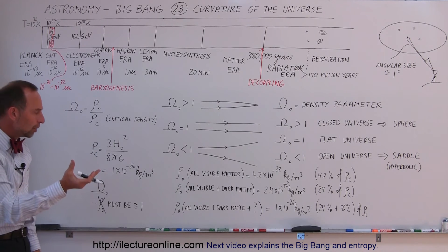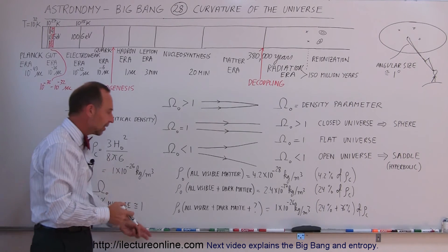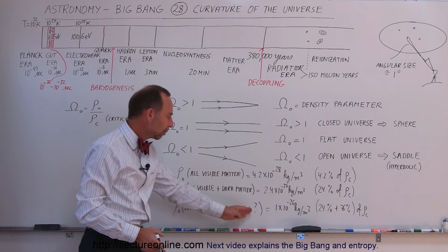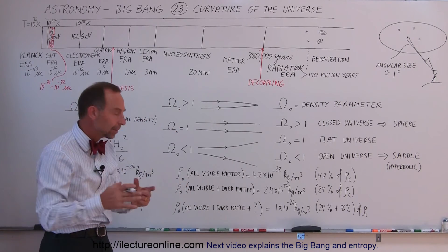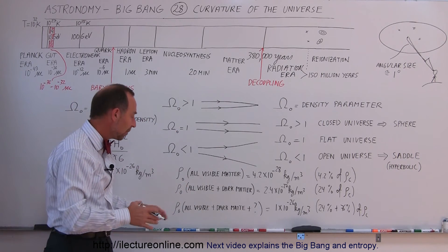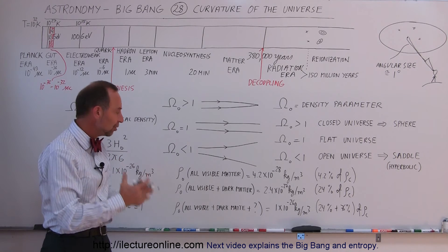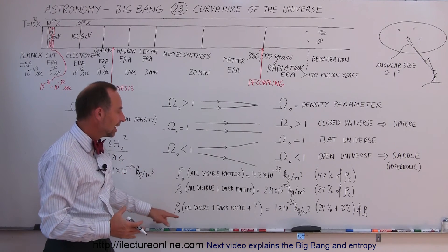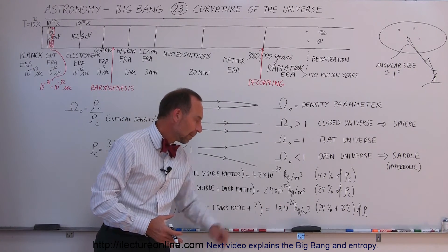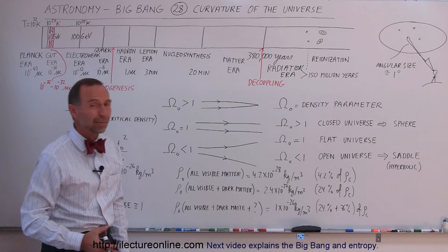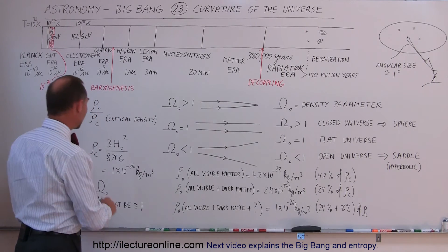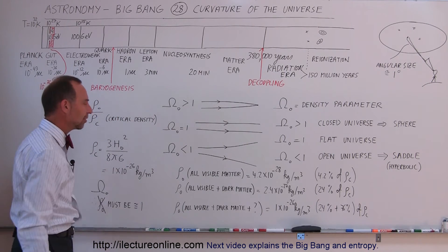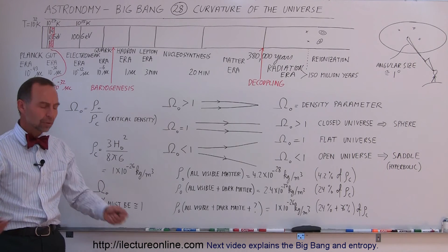There is a missing component. That means all the visible matter plus all the dark matter plus some unknown component together makes up enough density to give the universe a density of about 1 times 10 to the minus 26 kilograms per cubic meter — which is equal to the critical density. What is that missing component?